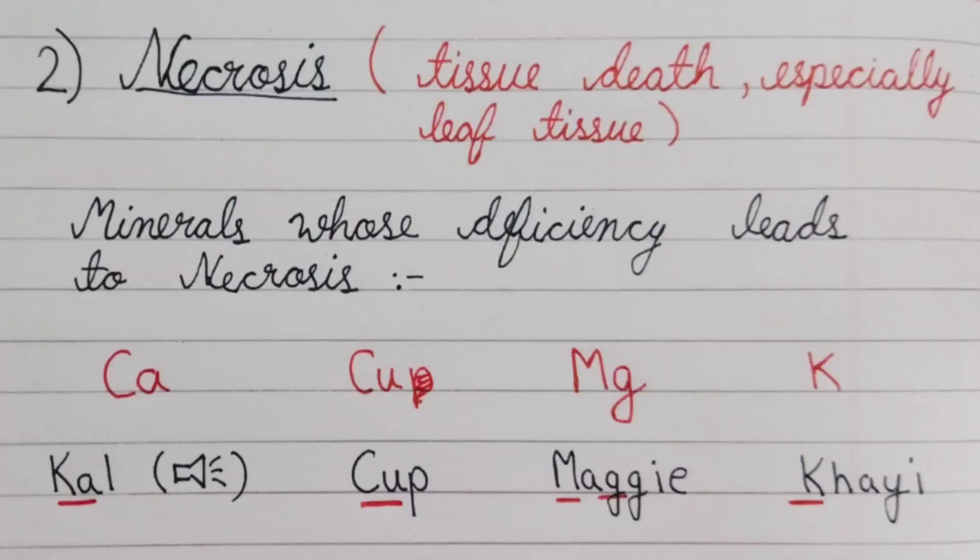The second deficiency symptom is necrosis. Necrosis means tissue death — especially the death of leaf tissue is called necrosis. The minerals whose deficiency causes necrosis include calcium, copper, magnesium, and potassium.